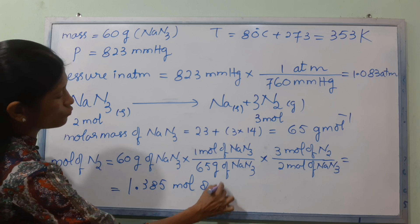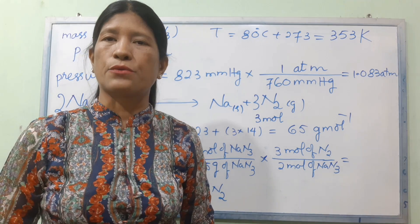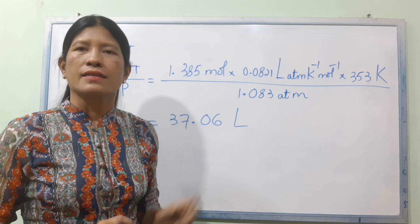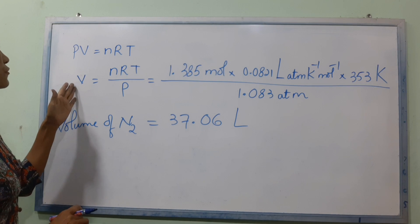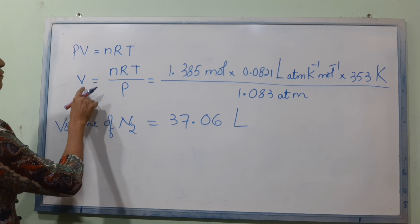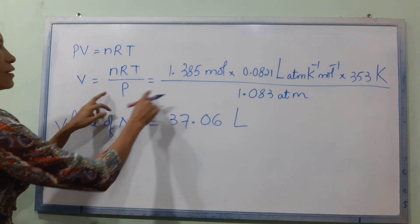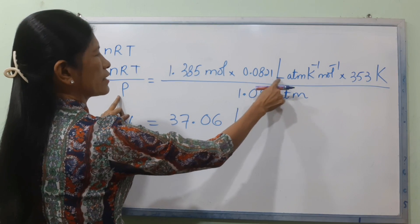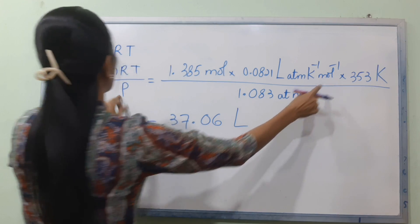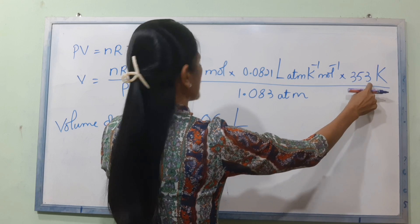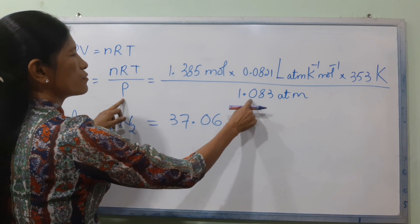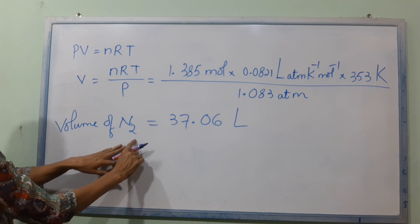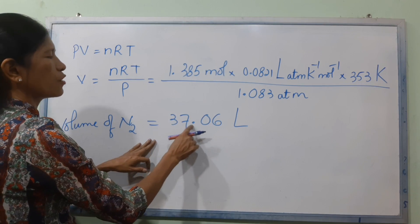We're going to get 60 grams for 3 mol. The formula gives n = 1.385 mol. Using PV = nRT, V equals nRT over P. R = 0.0821 L·atm per K·mol, Temperature = 353 Kelvin, Pressure = 1.083 ATM. The volume of nitrogen will be equal to 37.06 liters.